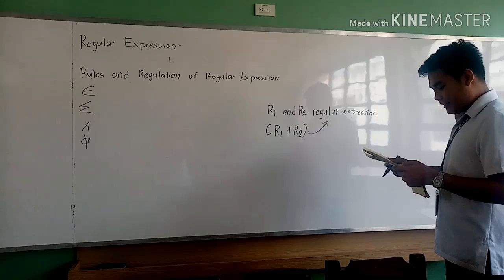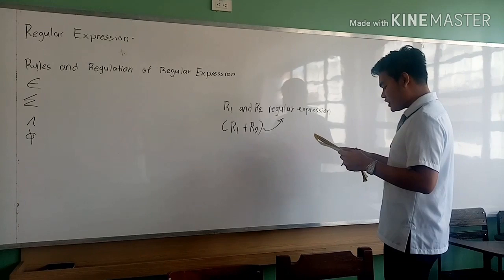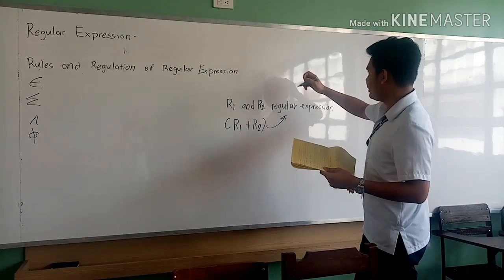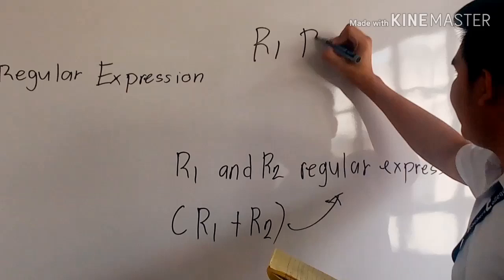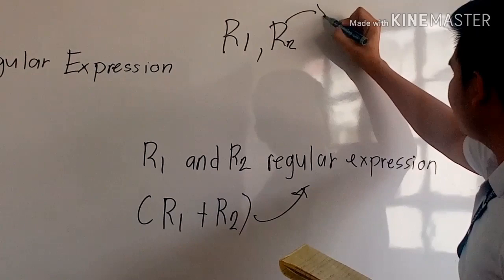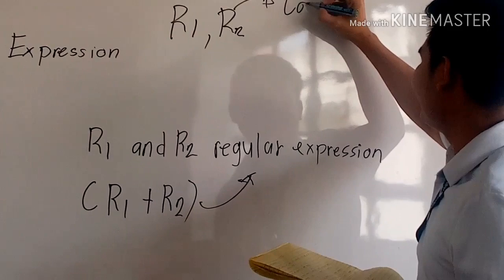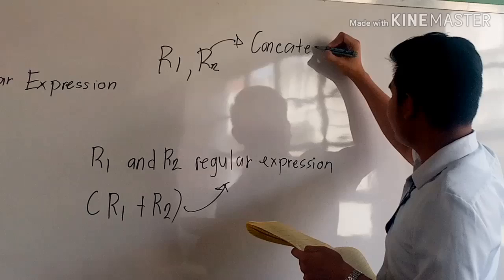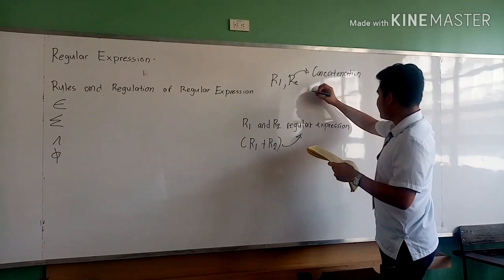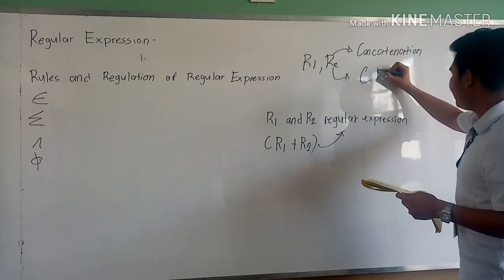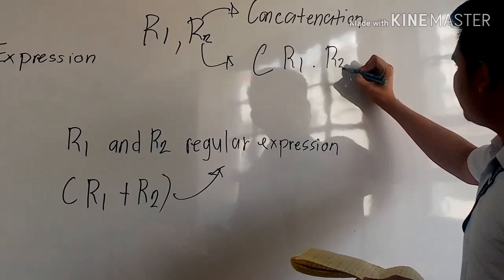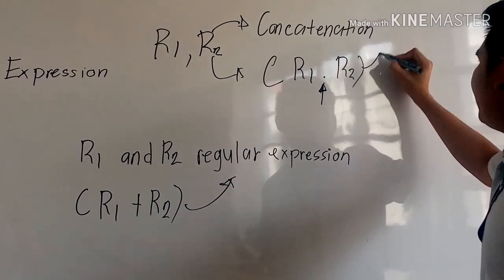Number three: the concatenation of two regular expressions is also a regular expression. So, if I have R1 and R2, this is called concatenation. Another example: R1 dot R2 is also called concatenation.